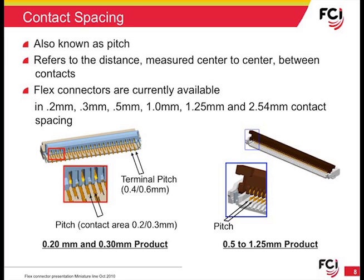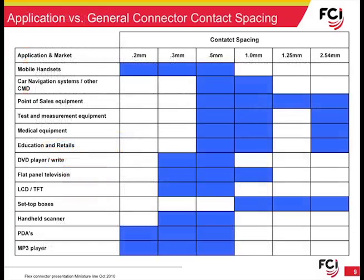For example, the designer of a handheld device places a premium on getting the maximum number of components in the smallest package. This chart shows typical pitch sizes found in various applications, illustrating which products are more common by application. Applications where size is less of an issue, such as set-top boxes and test equipment, utilize lower-density connectors. Use of lower-density products also results in lower costs for both cable and connector, as well as board processing.